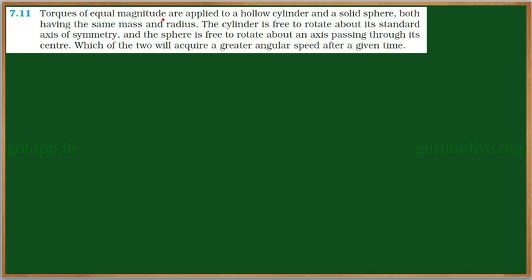See this problem: torques of equal magnitude are applied to a hollow cylinder and a solid sphere, both having same mass and radius. The cylinder is free to rotate about its standard axis of symmetry, and the sphere is free to rotate about its axis passing through its center. Which of the two will acquire a greater angular speed after a given time?